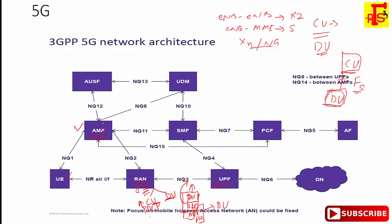The interface between AMF and SMF is NG11. The interface between the UE and AMF is NG1, and the interface between the UE and gNodeB (RAN) is the air interface.